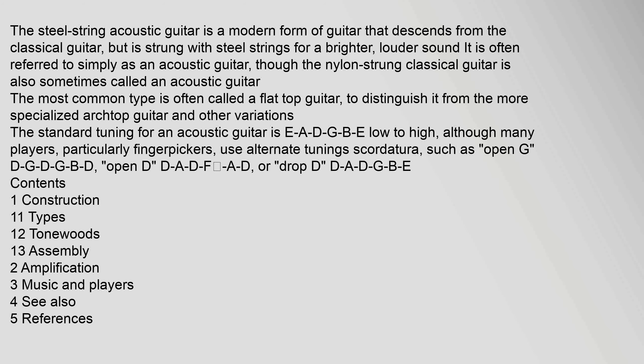The steel string acoustic guitar is a modern form of guitar that descends from the classical guitar, but is strung with steel strings for a brighter, louder sound. It is often referred to simply as an acoustic guitar, though the nylon strung classical guitar is also sometimes called an acoustic guitar. The most common type is often called a flat-top guitar.